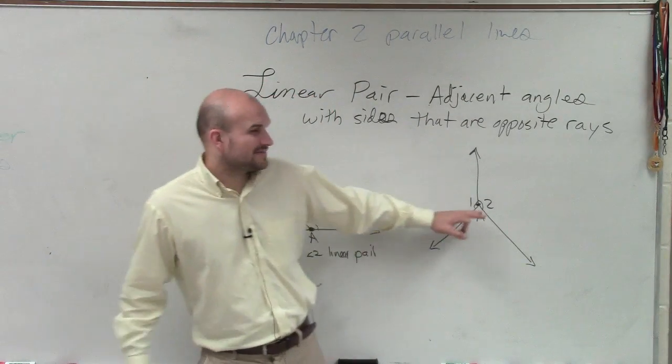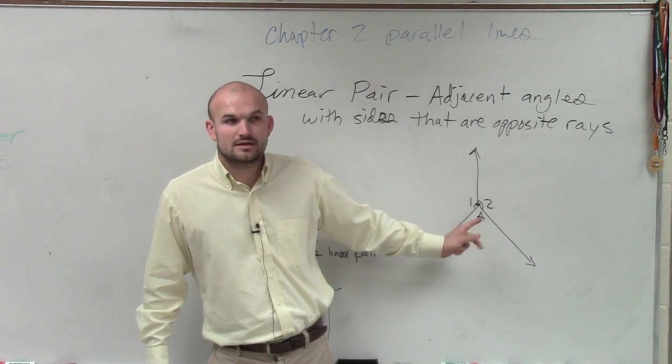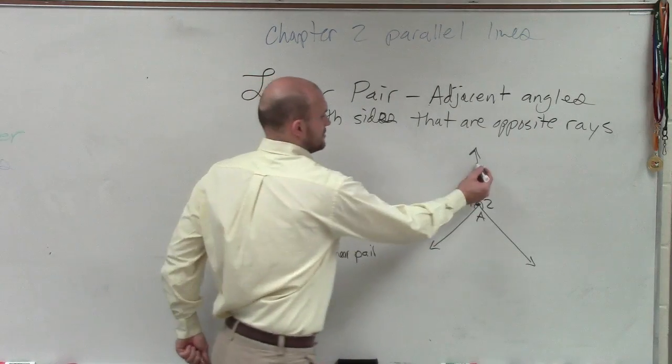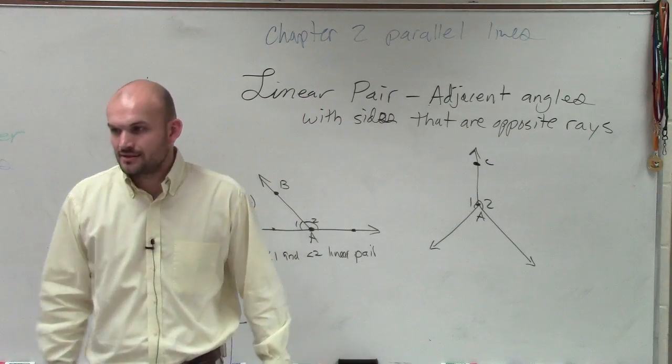So what we have is example one and two. Let's look at these. Do these share a common vertex? Do they share a common side? Yes, right? They share this side. Let's call this C. They share the line AC, or the ray AC.